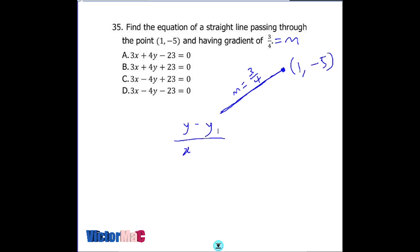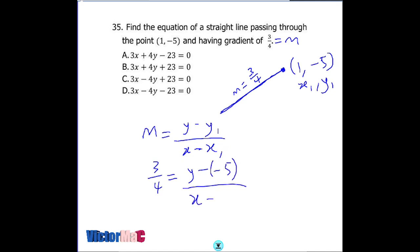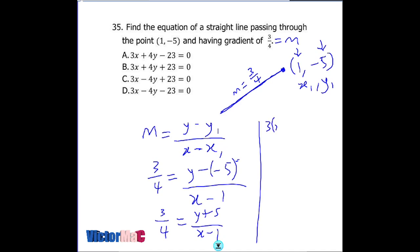The formula connecting a line passing through a point with the gradient given is: y minus y1 equals m times (x minus x1). Substituting: m is 3/4, y1 is -5, x1 is 1. So 3/4 equals (y minus (-5)) over (x minus 1), which gives y plus 5 over x minus 1. Cross multiplying: 3(x minus 1) equals 4(y plus 5). Expanding: 3x minus 3 equals 4y plus 20.